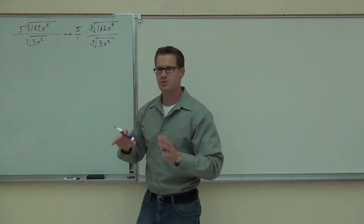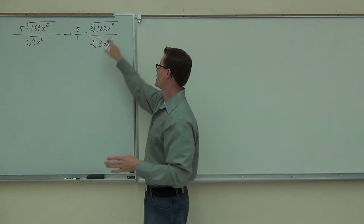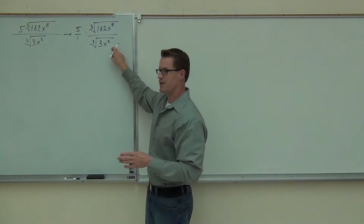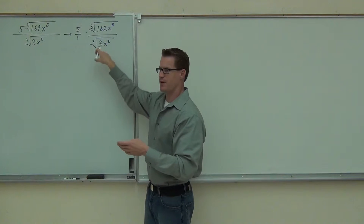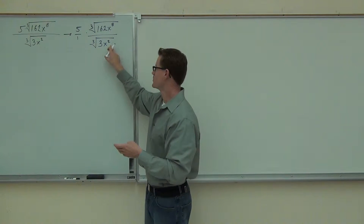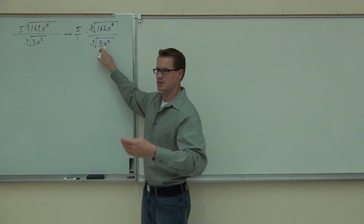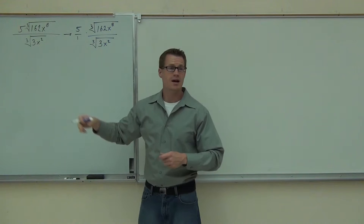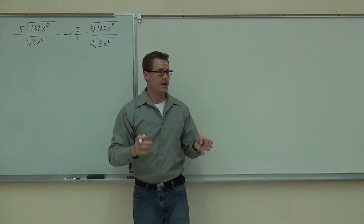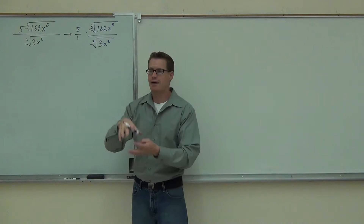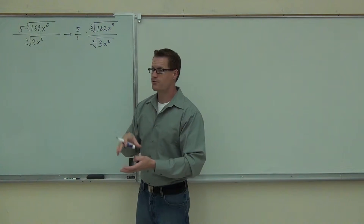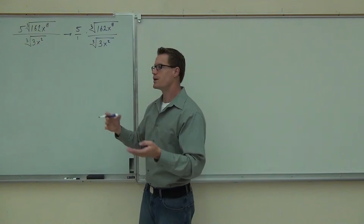Please, do not simplify this one first and try to simplify this separately — you can't even simplify that one. The power is less than the root; that 3 is not a perfect cube. You can't even simplify that. So at some point you would have to combine them anyway. Do it first — that way you don't waste your time. You'd simplify the top, then combine them, then simplify again. That would be a tremendous waste of time.